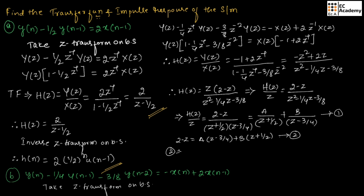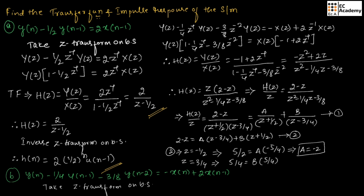In equation 2, if we put z = -1/2, we get 5/2 = A · (-5/4), from which a = -2. In the same way, if we put z = 3/4, we get 5/4 = B · (5/4), from which b = 1. So we got the values of A and B. Substituting into equation 1, H(z) = -2z/(z + 1/2) + z/(z - 3/4).